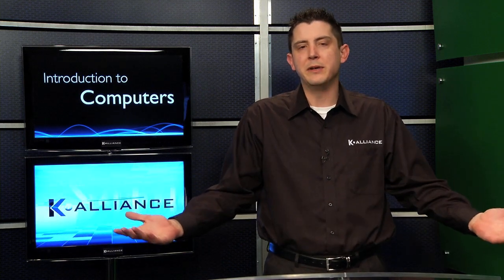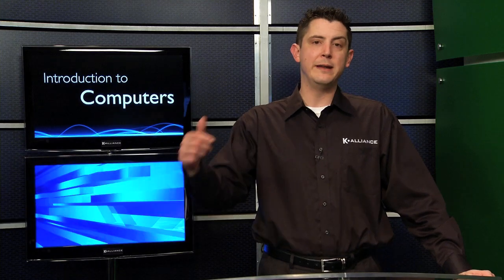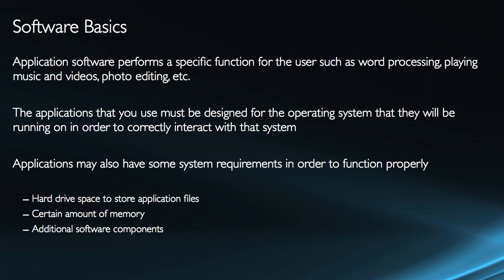We couldn't even begin to cover the different application software that you can run, because there are millions of programs, all designed for very specific purposes. Application software performs a specific function like word processing, playing music and videos, photo editing, email, and so on. These applications have to be designed to work with the operating system you're using in order to correctly interact with the system. So I need Windows, and then I'll get programs that perform some specific function and are compatible with my version of Windows.